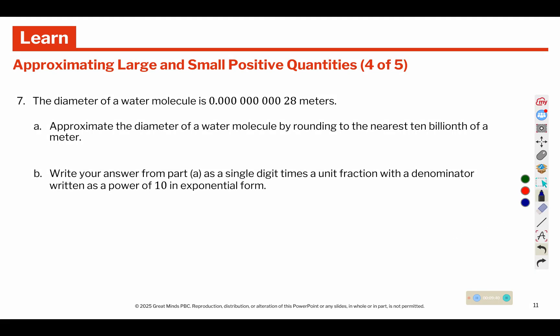Approximate the diameter of a water molecule by rounding to the nearest 10 billionth of a meter. So we have tenths, hundredths, thousandths, ten thousandths, hundred thousandths, millionths, ten millionths, hundred millionths, billions, ten billionths. So the 8 makes the 2 round up to a 3.